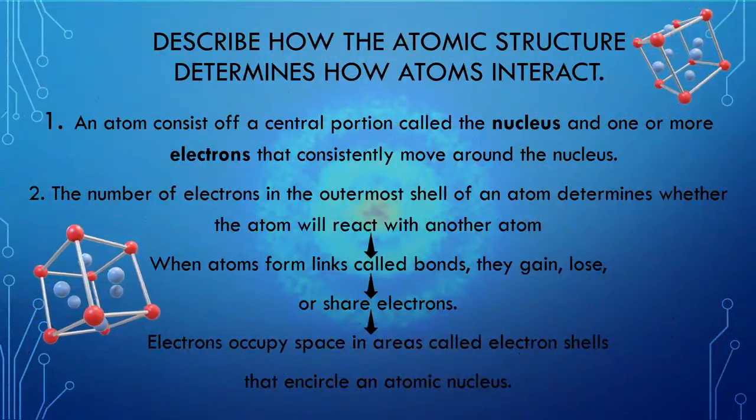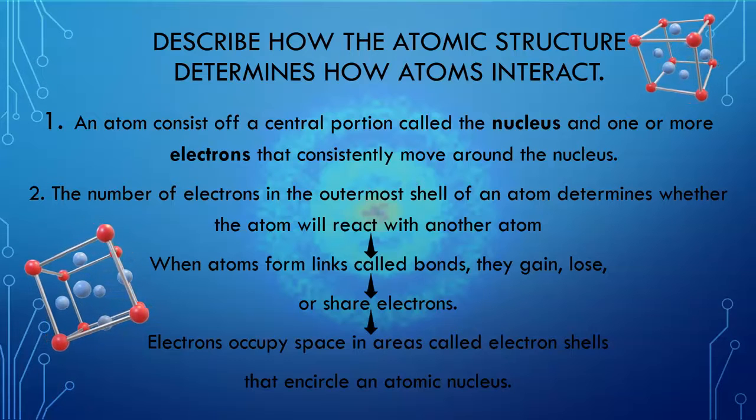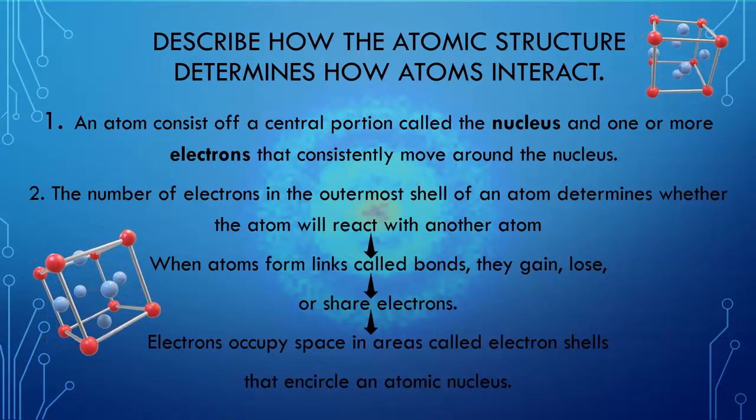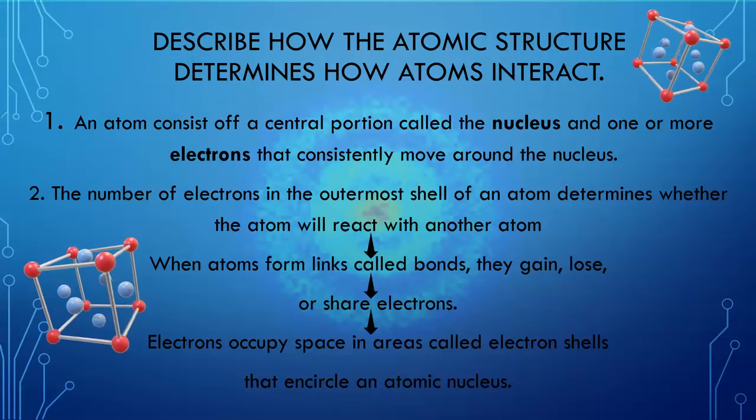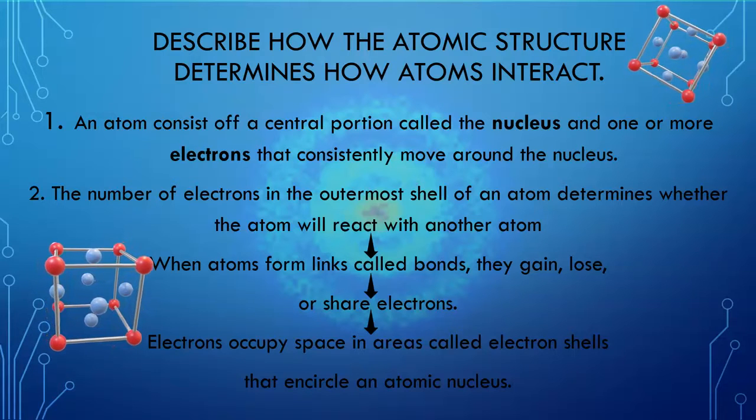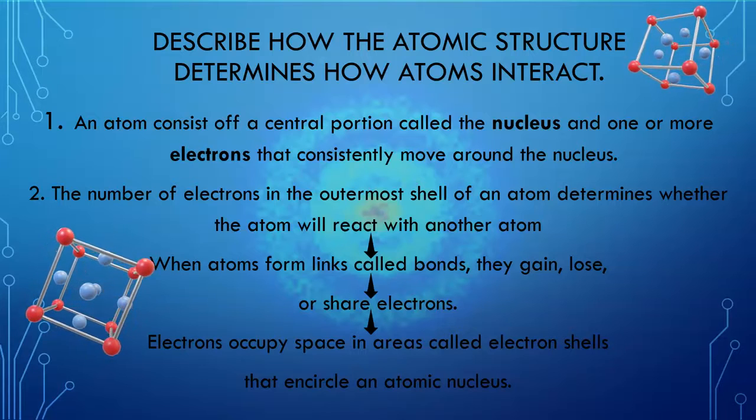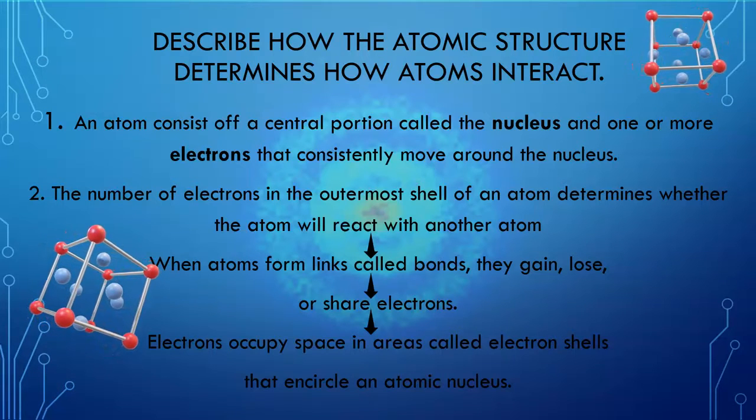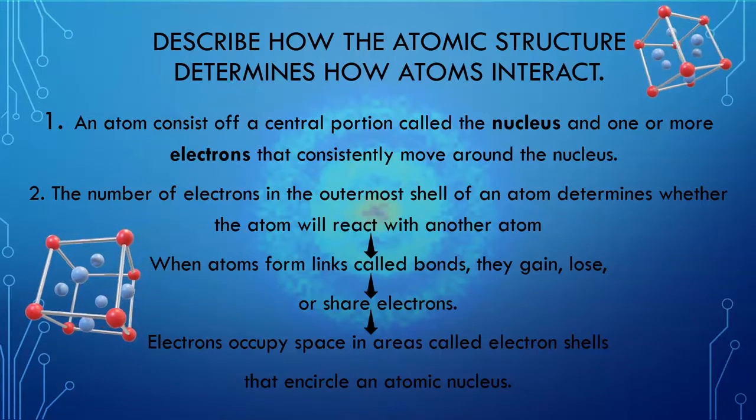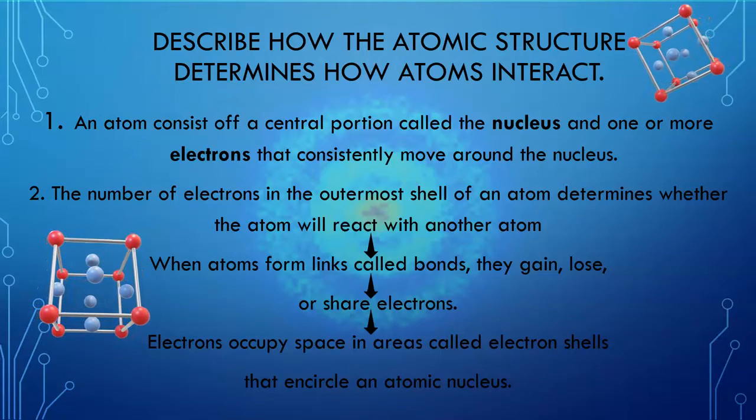Now, I was told to describe how the atomic structure determines how atoms interact. An atom consists of central portions called the nucleus and one or more electrons that consistently move around the nucleus. The number of electrons in an outermost shell of an atom determines whether an atom will react with another atom.